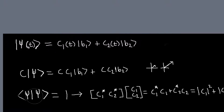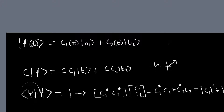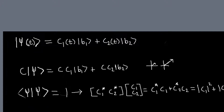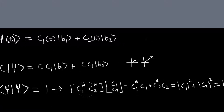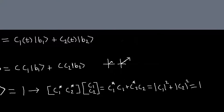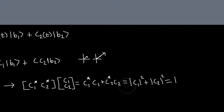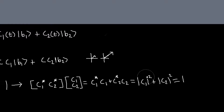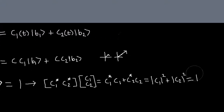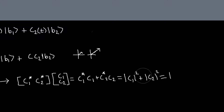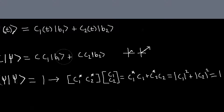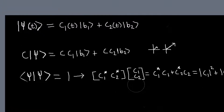If you normalize this state vector such that the inner product of the state vector with itself is 1, and if you work that out using the linear algebra we talked about last time, then the inner product with itself will be the modulus of C1 squared plus the modulus of C2 squared, where modulus squared just means take the thing and multiply it by its complex conjugate. We want this to equal 1, so if it isn't, all we have to do is divide by the square root of this number, and then we'll have new coefficients that satisfy this property.